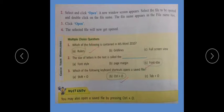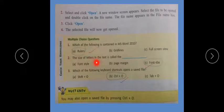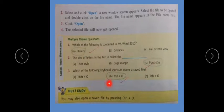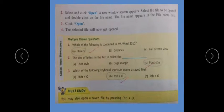Multiple choice question: which of the following is contained in MS Word 2010? Rulers. The size of letters in the text is called the font size. Which of the following keyboard shortcuts opens a saved file? Control+O. You may also open a saved file by pressing Control+O.